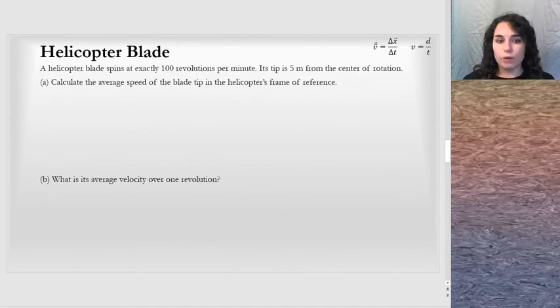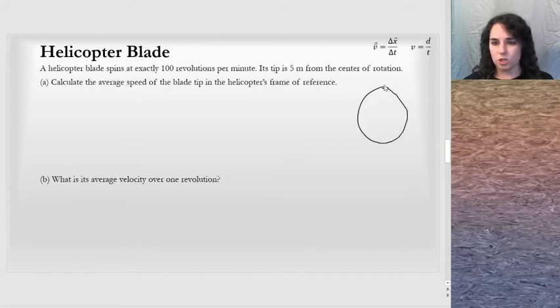I have a word problem next: helicopter blade. It says a helicopter blade spins at exactly 100 revolutions per minute. Its tip is 5 meters from the center of motion. Now we can draw a picture for this. I'm going to draw a circle, and of course there's some blades in here. I don't know exactly how many. I'm going to assume 3. So I can write in here that the radius, r equals 5. And it's spinning around.